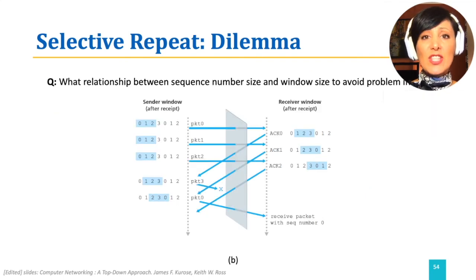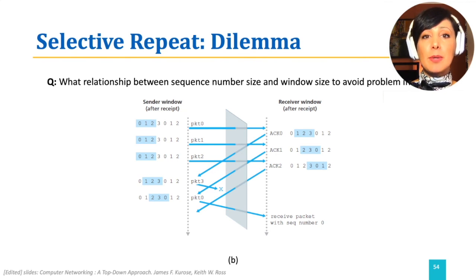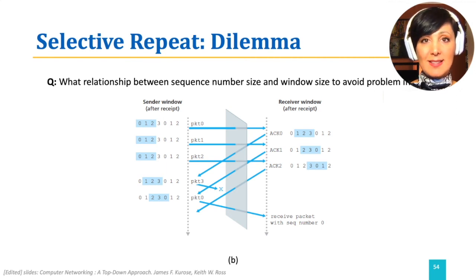So the question is: what relationship between the sequence number range and window size should be maintained to avoid the problem we just saw? The size of the window should be less than or equal to half of the size of the sequence number space. The discussion of why is left as an exercise for you.